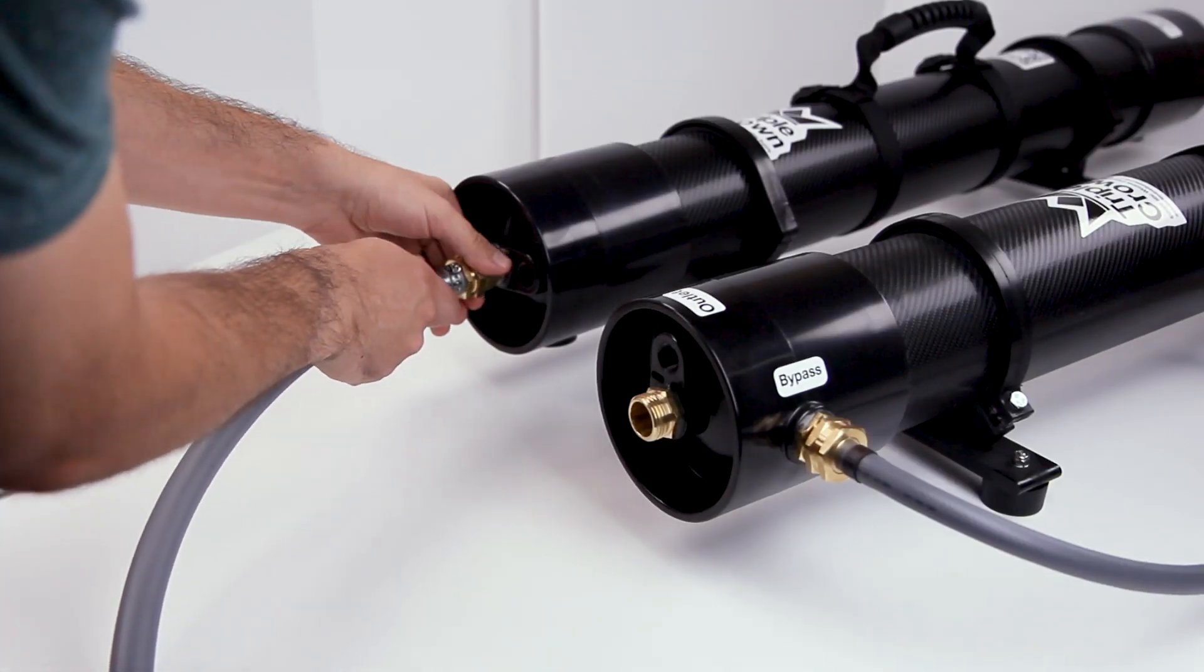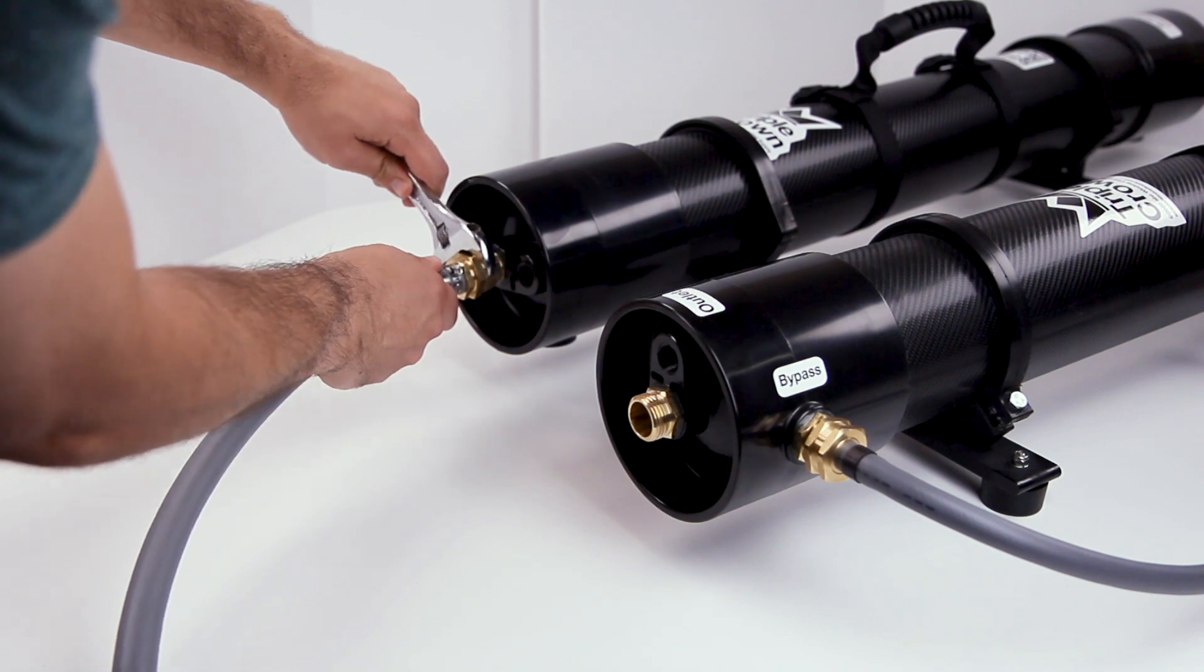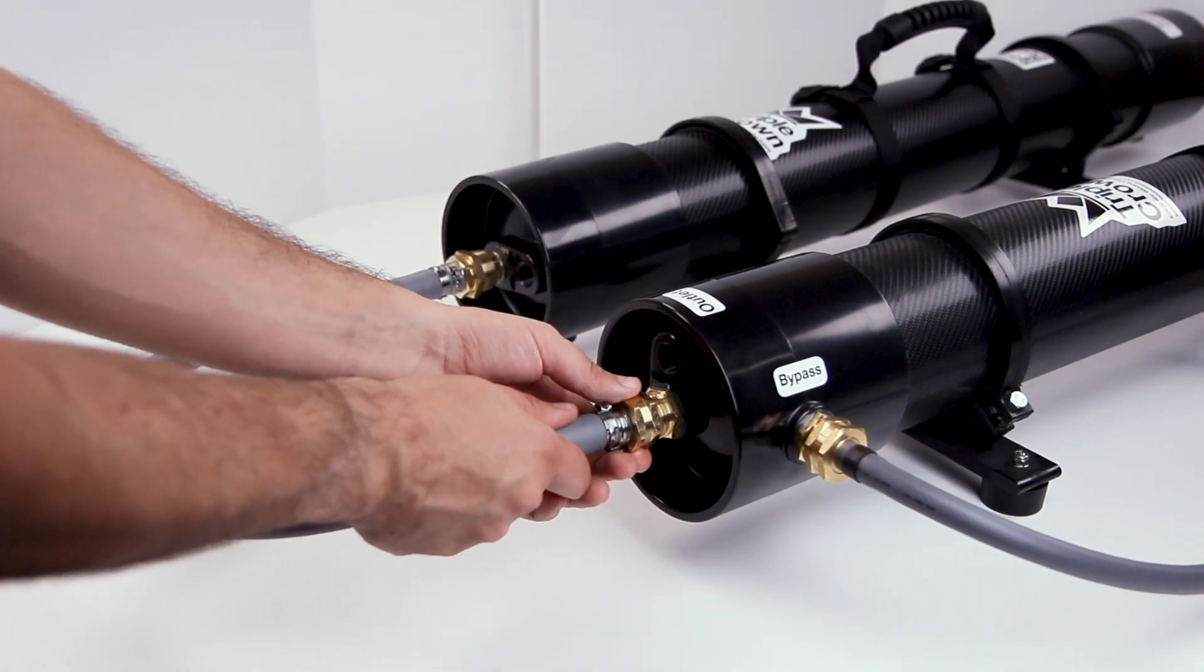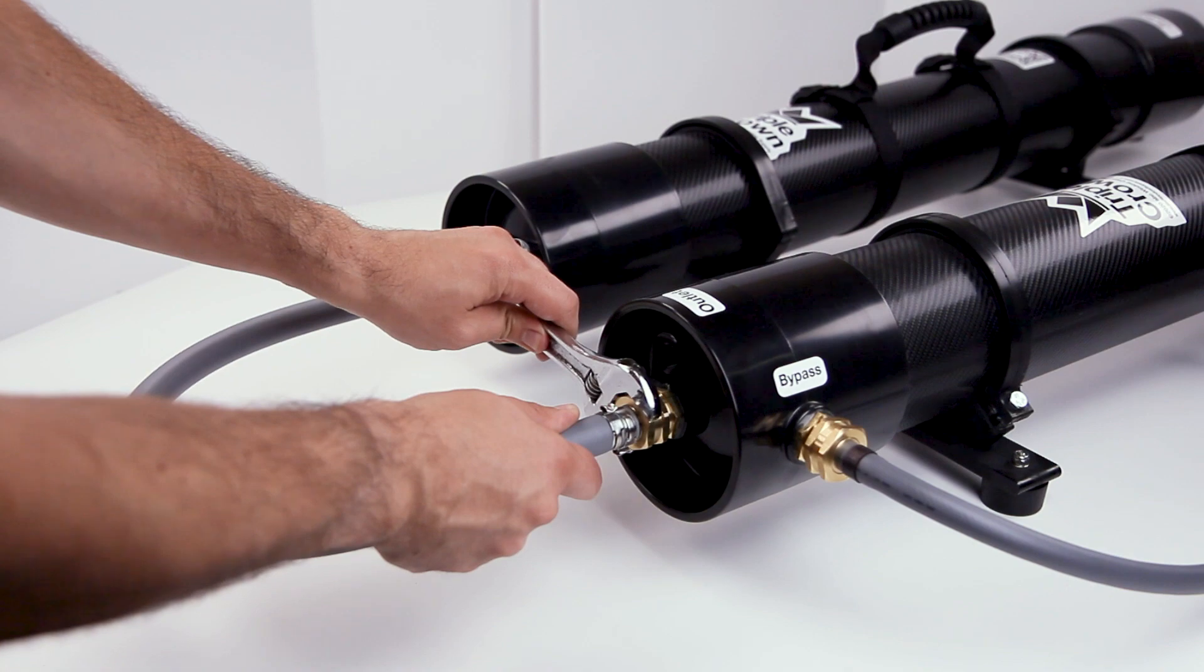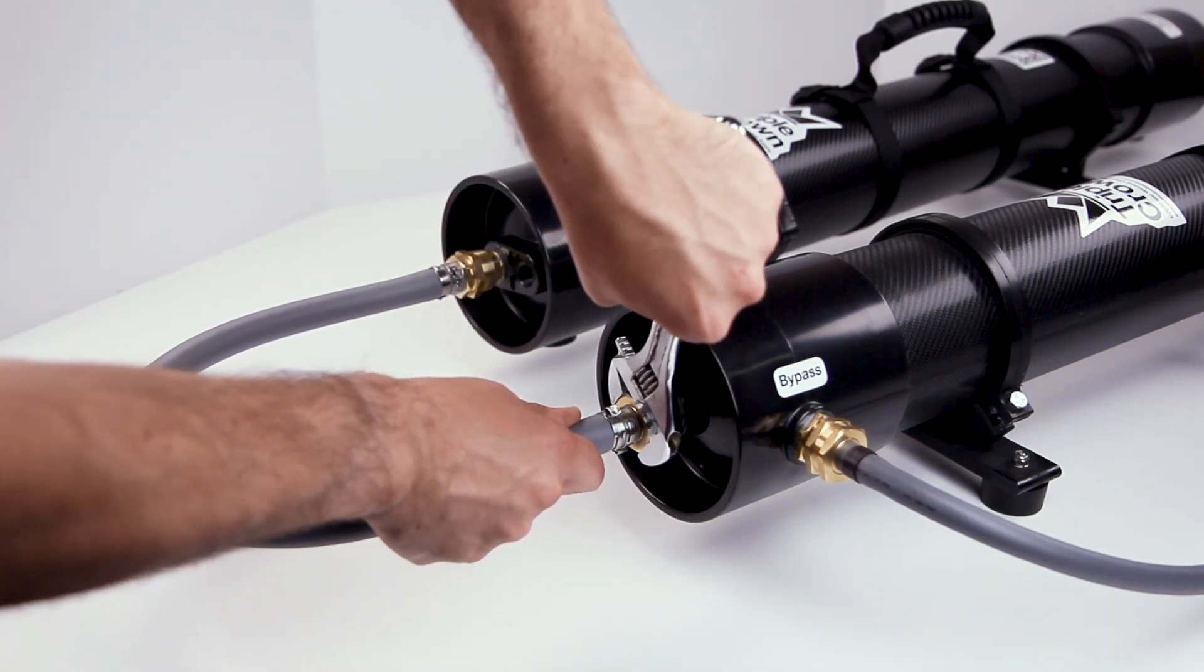Optional: If your source water is over 200 TDS or your output is over 10 TDS, add a DI filter such as the Photon. We recommend using half an inch hose.